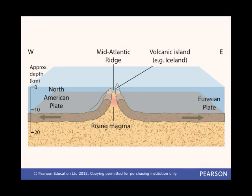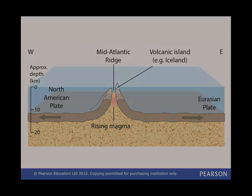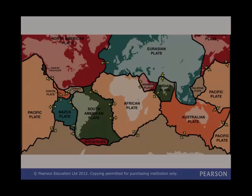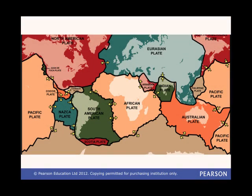Most plates are being created at constructive plate boundaries in a process known as seafloor spreading, which pushes plates outwards. And most plates are then being destroyed at destructive plate boundaries, where one plate is pushed down underneath another into the mantle. But some plates are not associated with any constructive plate boundaries and their movement is not yet fully understood.